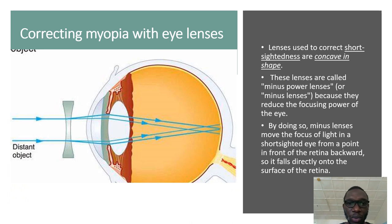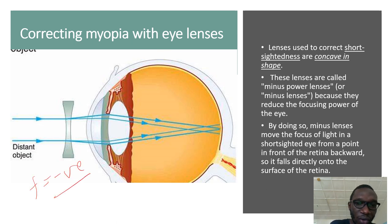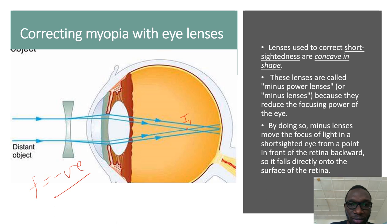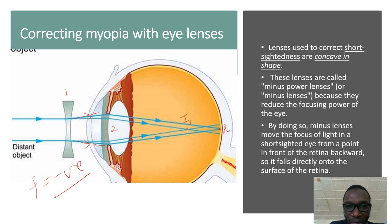Let's see how we can correct myopia. We correct it using a diverging lens, which has a negative focal length. The problem is that our lens is too strong — it converges the rays so much that the image I1 is formed before it reaches the retina. So we use a diverging lens, which first diverges the rays, and then the natural lens (lens 2) converges them and finally forms the image at the retina. That's how we correct this defect.